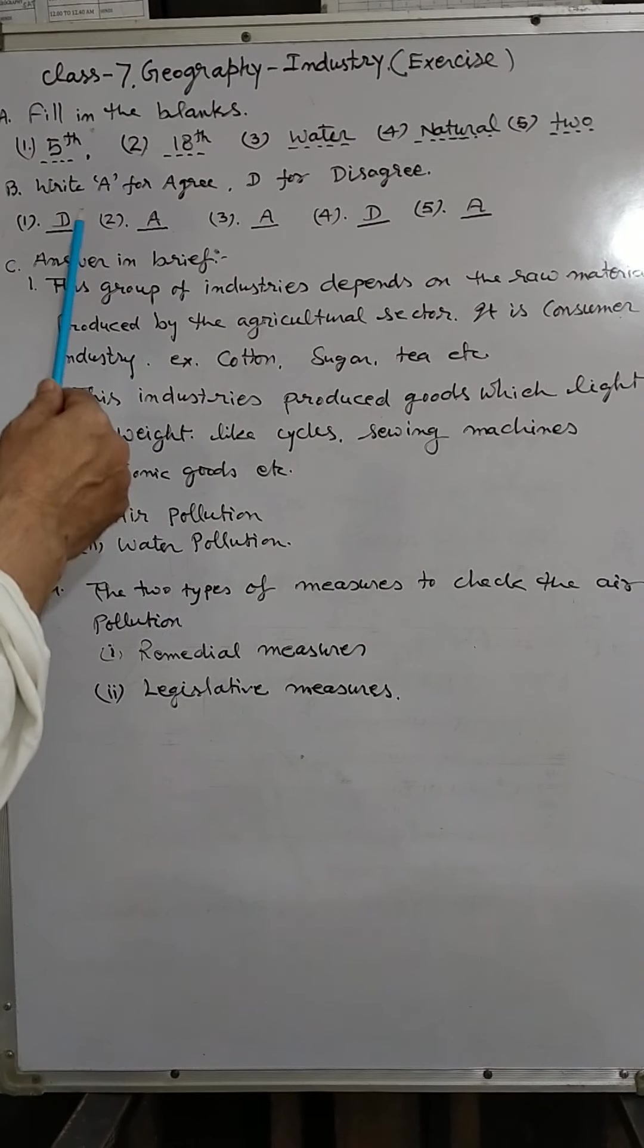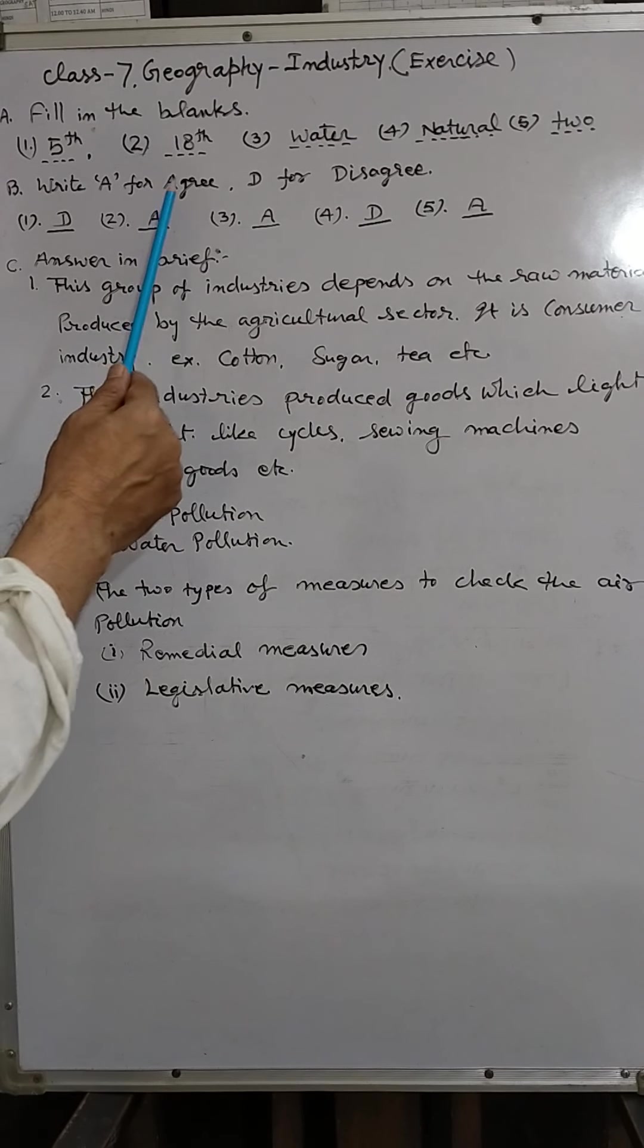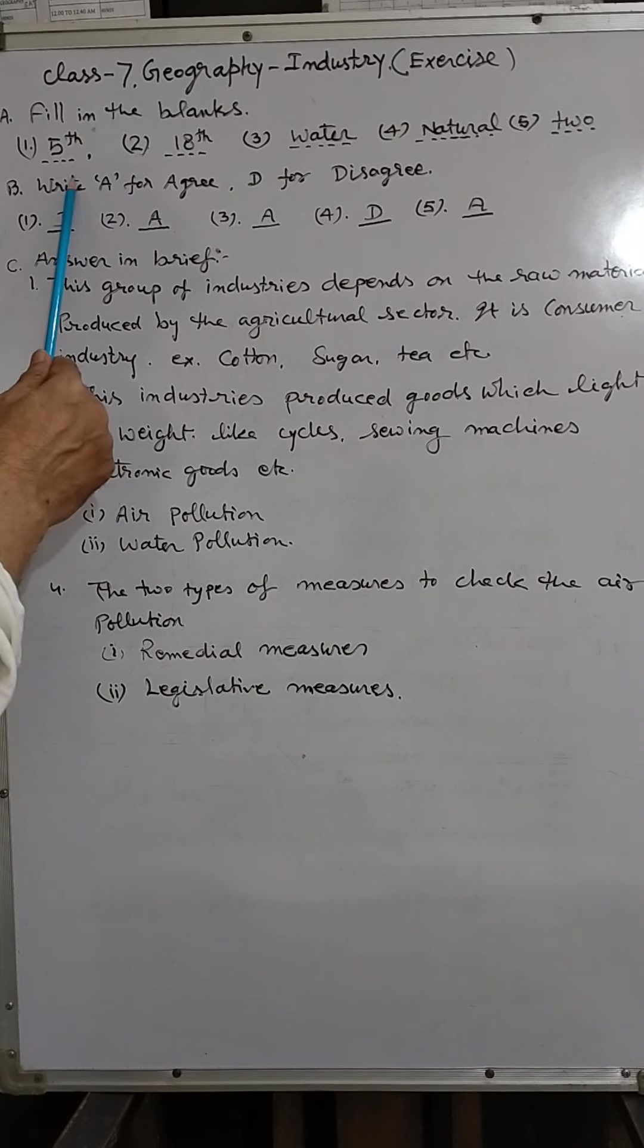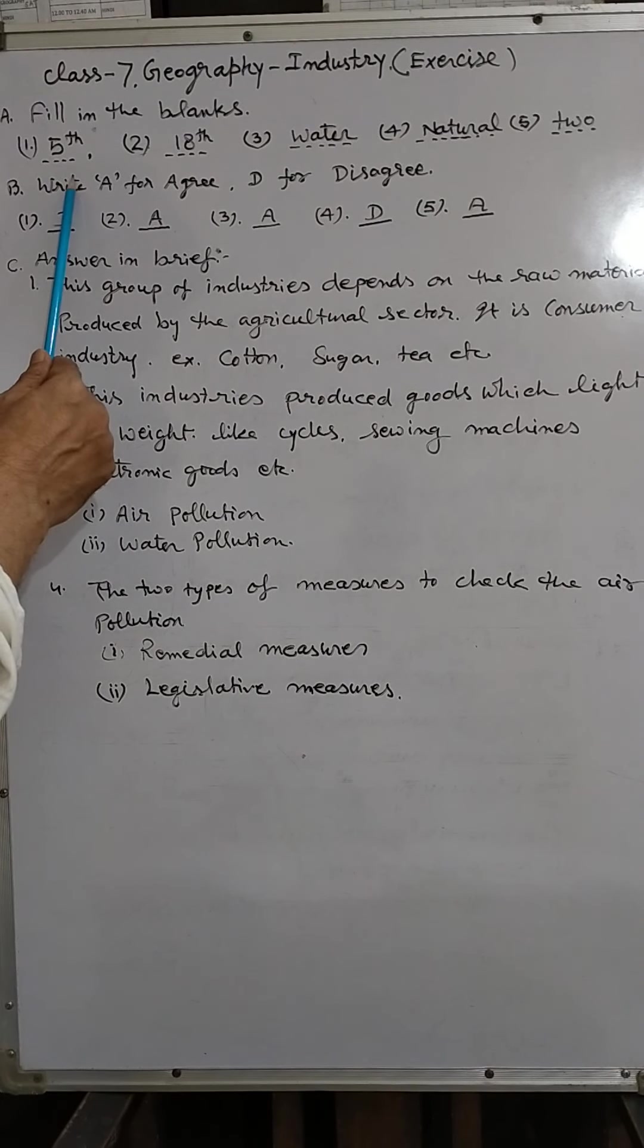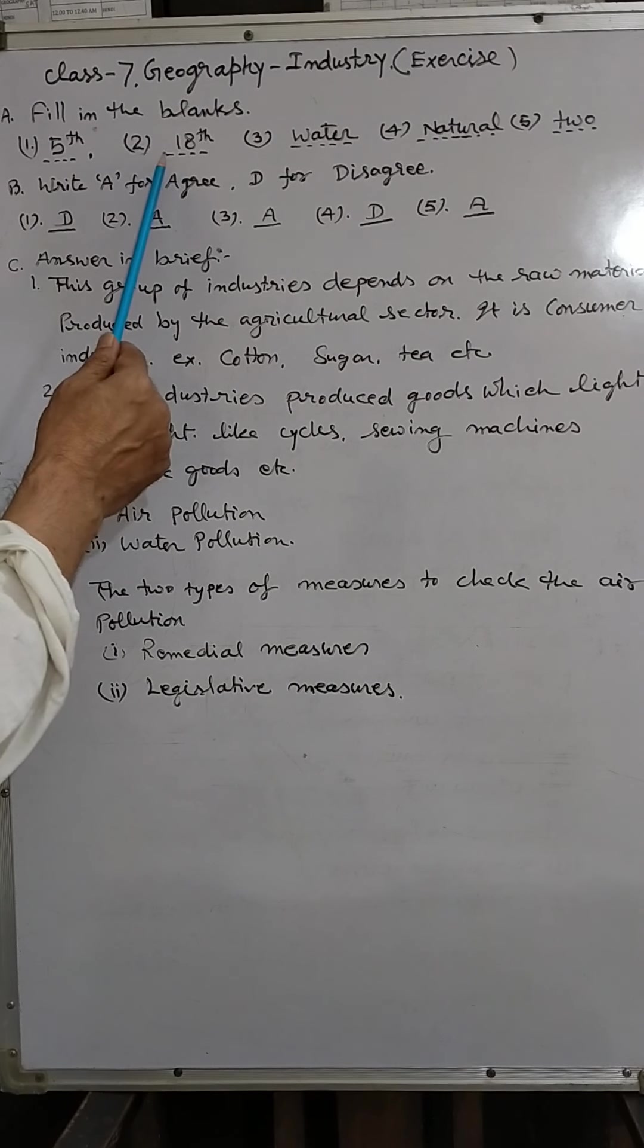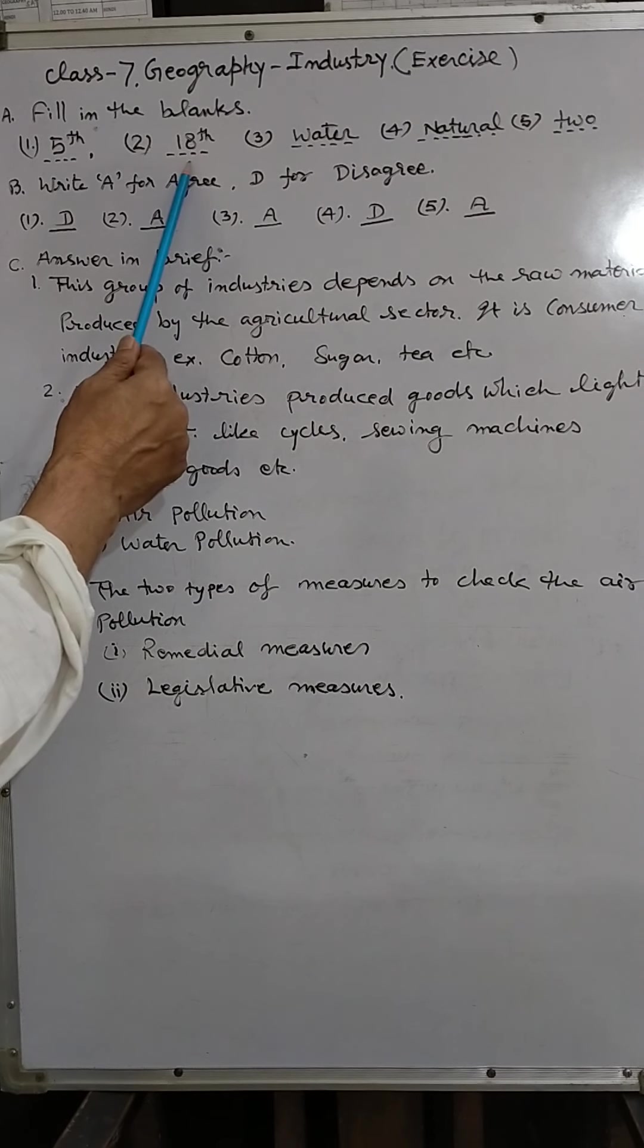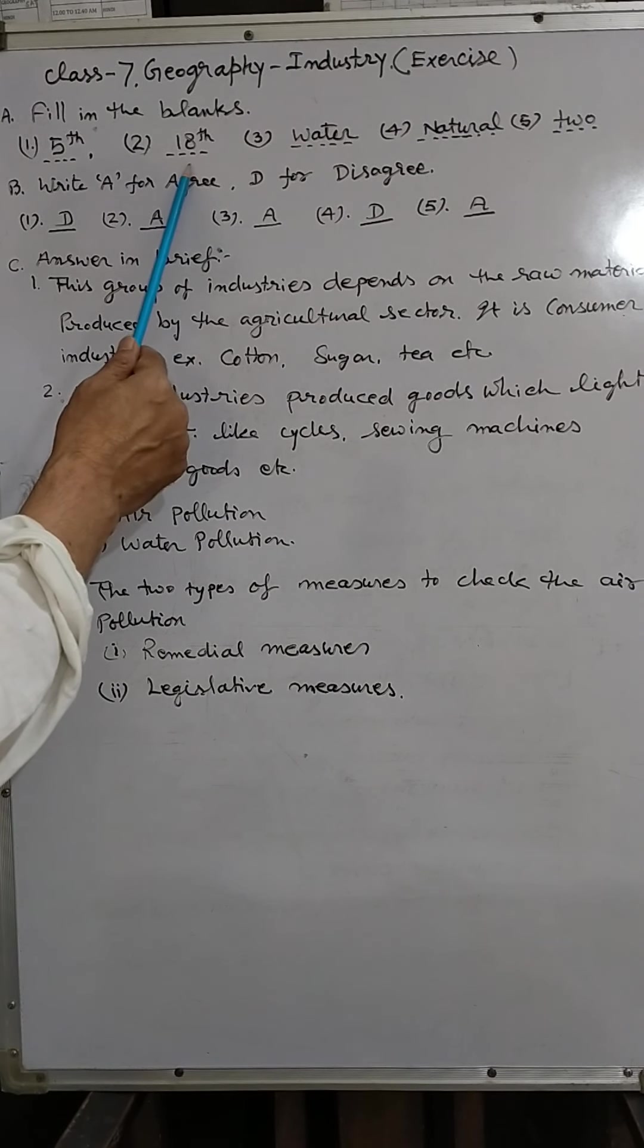First fill in the blank: India has the fifth largest iron ore deposit in the world. Fifth largest iron ore deposit. Second: Industrial revolution took place in Britain in the 18th century.